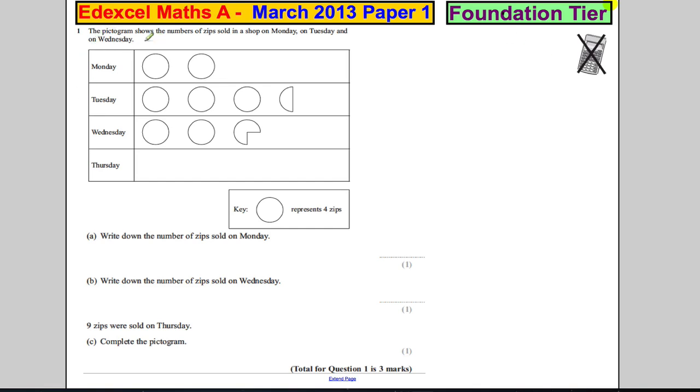Okay, question one. We have a pictogram that shows the number of zips sold in a shop on Monday, Tuesday, and Wednesday. Here's our pictogram and here's the important piece of information, the key. The key tells us that every circle represents four zips.